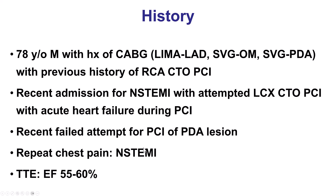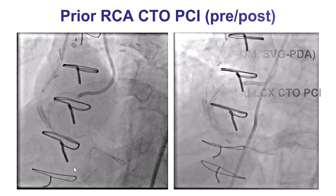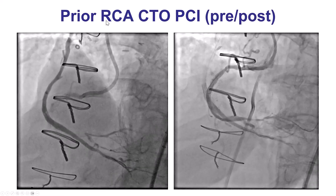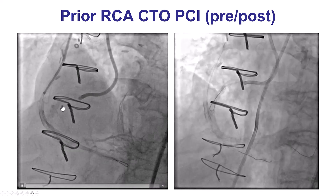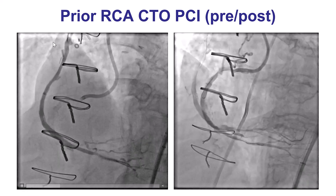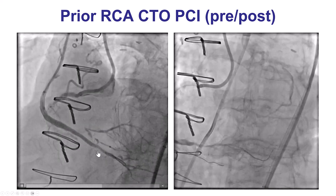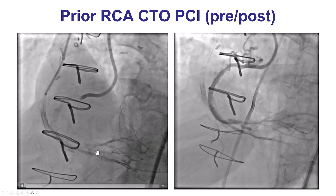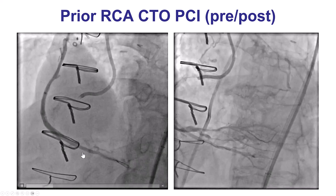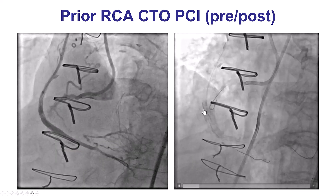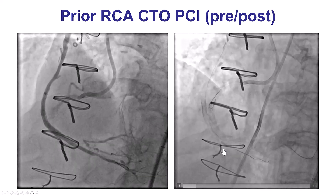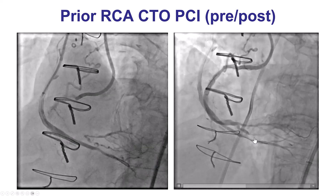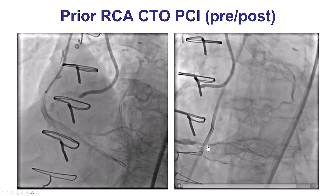The patient came again with non-ST elevation myocardial infarction. He did have normal ejection fraction. This is the anatomy before the CTO of the right coronary artery — a heavily calcified CTO with a saphenous vein graft going into the PDA. A retrograde approach was used and we were able to re-canalize the native right coronary artery, but stents could not be placed into the PDA because of tortuosity.